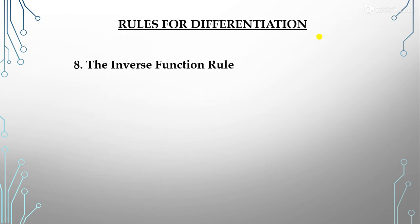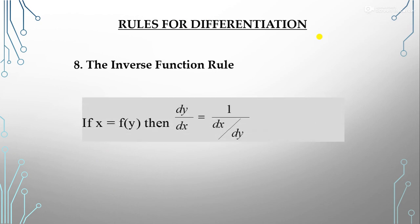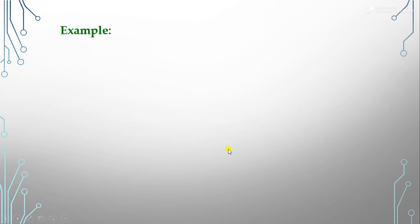Next is the inverse function rule. If our function x = f(y) and we need to find dy/dx, since the function x is given in terms of y, we can easily calculate dx/dy. Then dy/dx = 1 / (dx/dy). This is the inverse function rule.